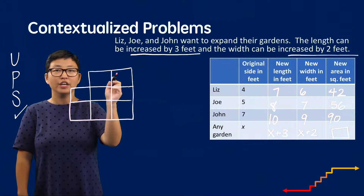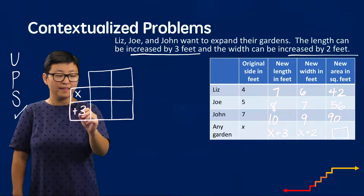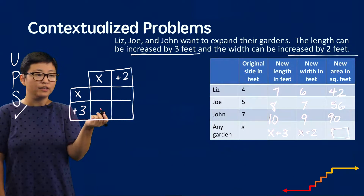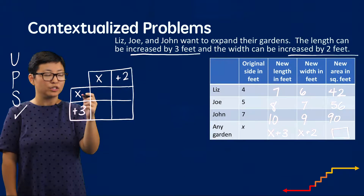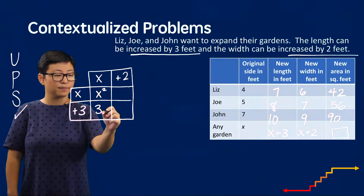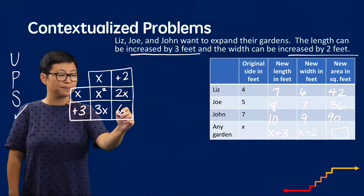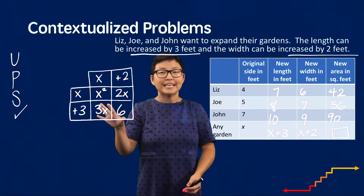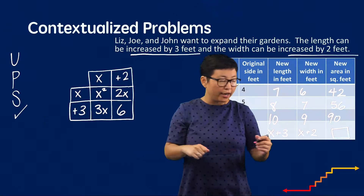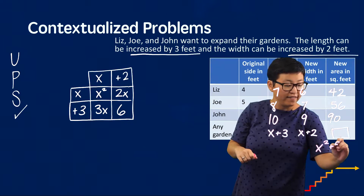We look at our two terms: x plus 3 and x plus 2. We distribute each term across the other: x times x is x², x times 3 is 3x, 2 times x is 2x, and 2 times 3 is 6. Now we translate the answer back to our table. The new area in square feet is represented by the expression x² + 5x + 6.